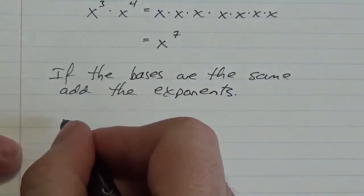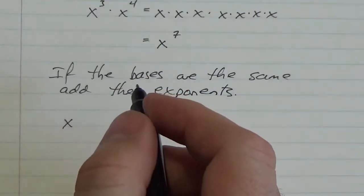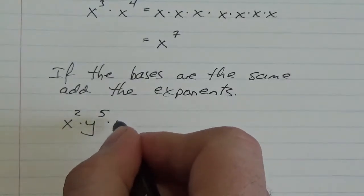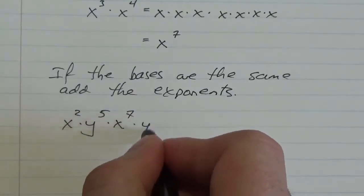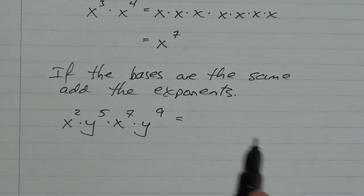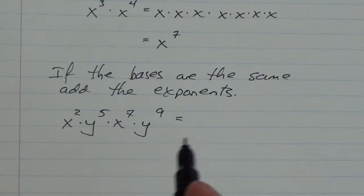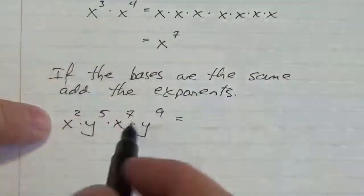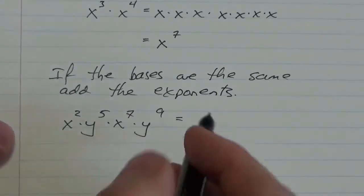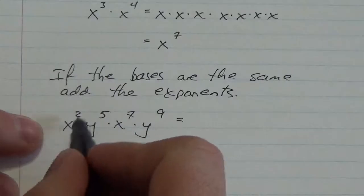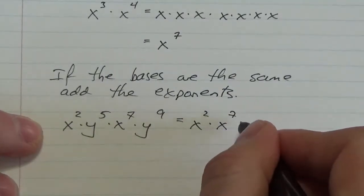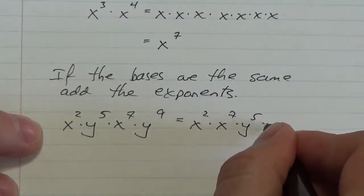Let's say it's x squared multiplied by y to the fifth, multiplied by x to the seventh, multiplied by y to the nine. Well, I can't put the x's and the y's together. I can't combine, for example, those two. But everything here is being multiplied together. Order doesn't matter with multiplication. So I can put that x squared together with the x to the seven, and then the y to the fifth, multiplied by y to the nine.